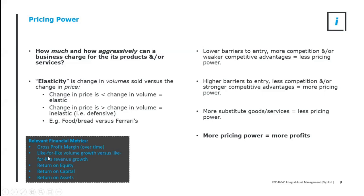Have a look at real world things — the change in volume versus like-for-like revenue growth. Remember, revenue is volume multiplied by price. A pricing power business will have revenue growing faster than volume because they're passing price increases onto end consumers. And a really strong business has good returns on equity, good returns on capital, good returns on assets.